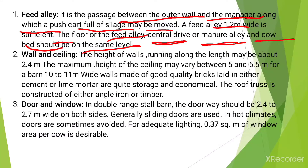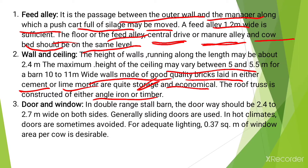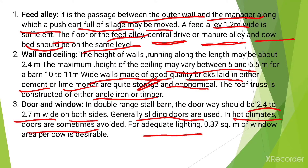The next component is the wall and ceiling. The height of the walls running along the length may be about 2.4 meters and the maximum height of the ceiling may vary between 5 and 5.5 meters for a barn that is 10 to 11 meters wide. Walls made of good quality bricks laid in cement or lime mortar are strong and economical, and the roof truss is constructed of either angle iron or timber. The last component is the door and window. In a double range stall barn, the doorway should be 2.4 to 2.7 meters wide on both sides and sliding doors are generally used. In hot climates, doors are sometimes avoided, and for adequate lighting, 0.37 square meters of window area per cow is desirable.